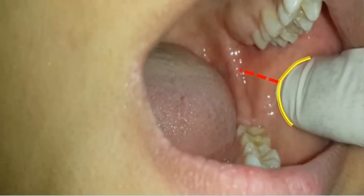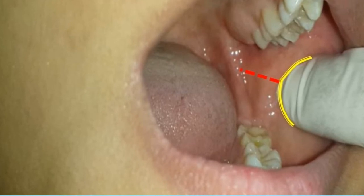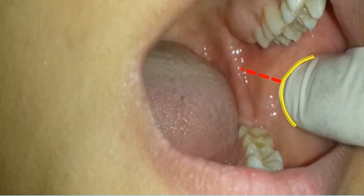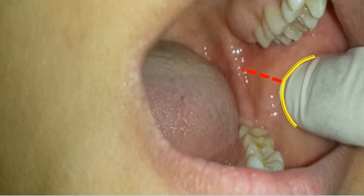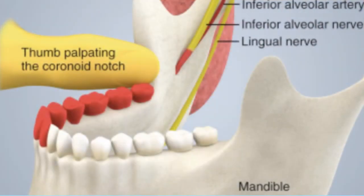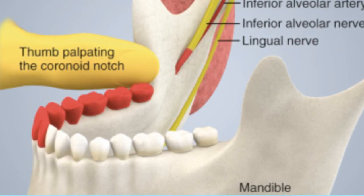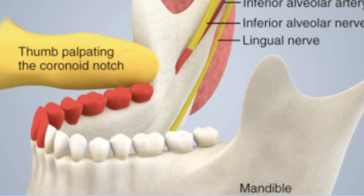Then you will see a line there. This line is called the pterygomandibular raphe. Just lateral to the pterygomandibular raphe is the pterygomandibular depression. Here is a clearer picture showing your thumb palpating the coronoid notch, and you can see the inferior alveolar nerve.